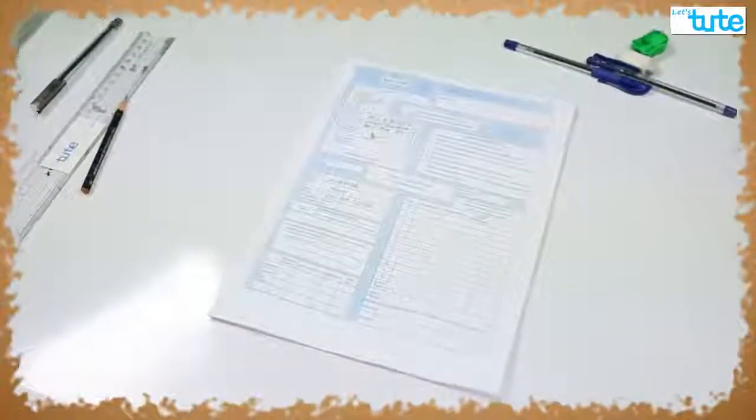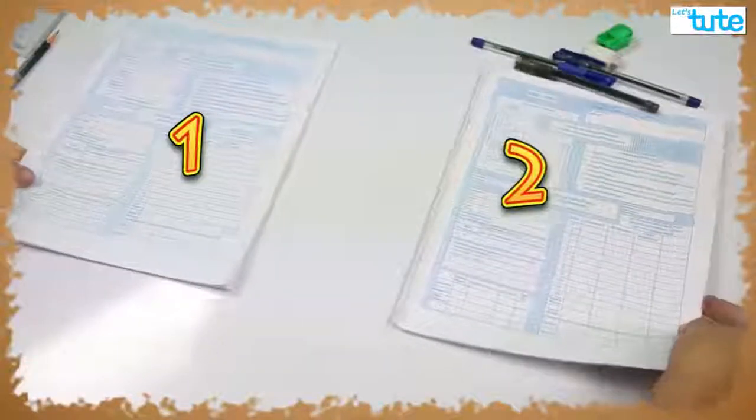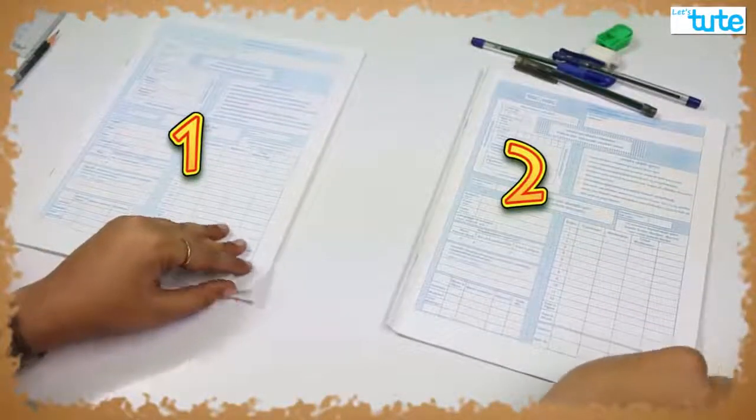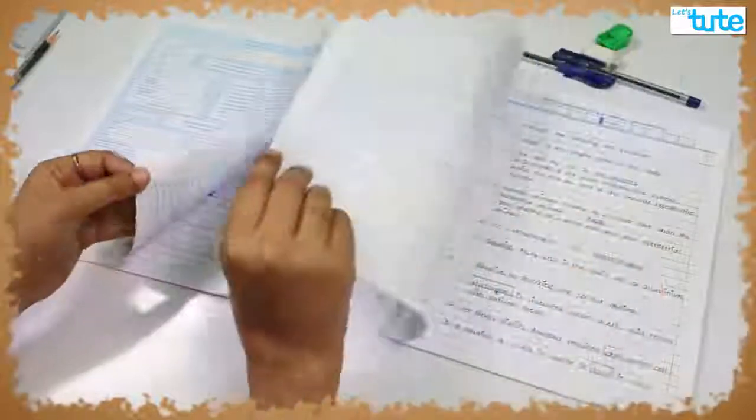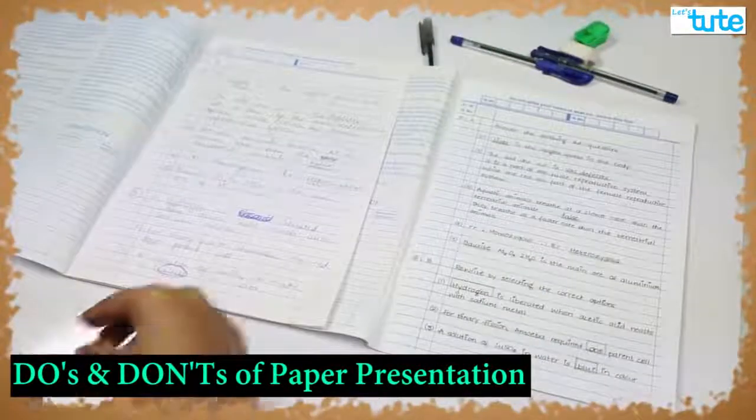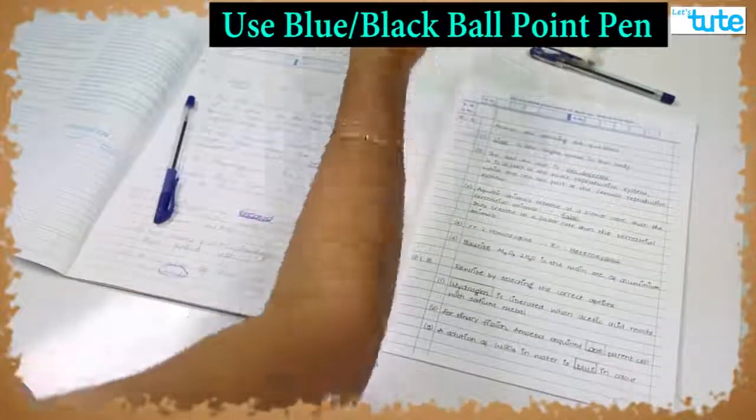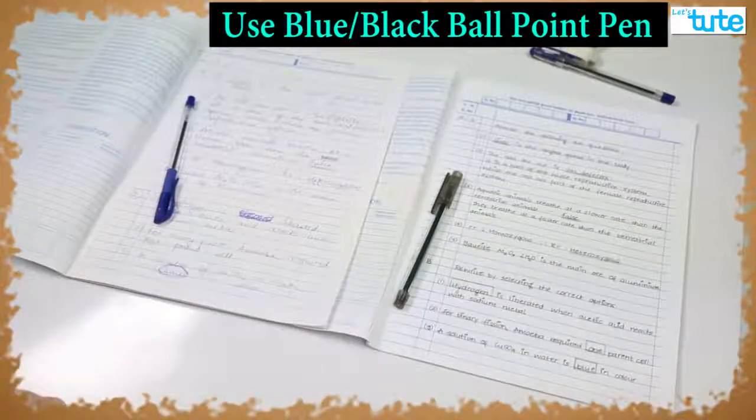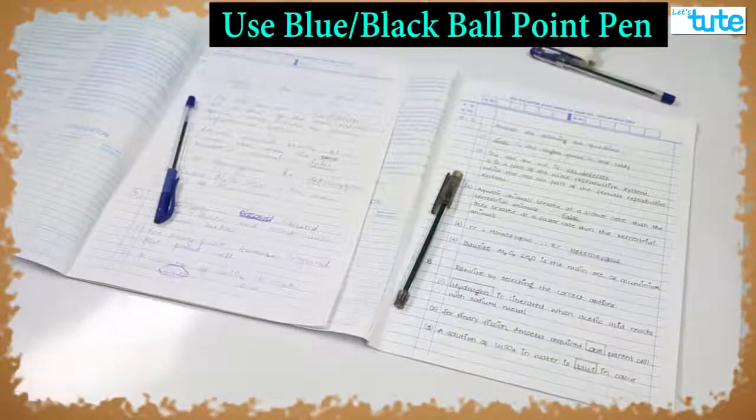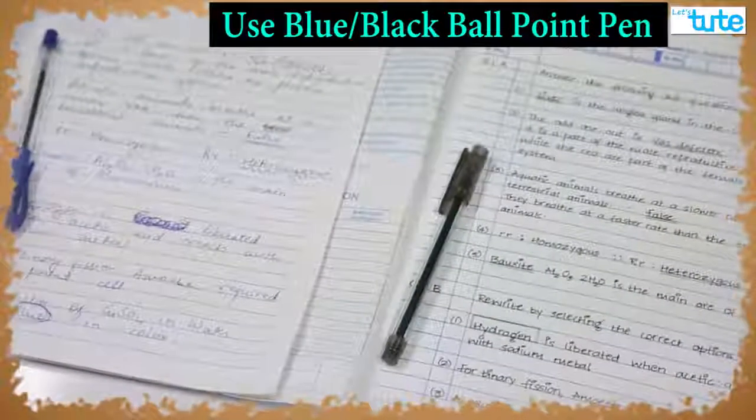Now comes the actual writing part. Here we have two answer booklets of the same subject. By comparing them, we will see certain do's and don'ts of paper presentation. Write your paper by using blue or black ballpoint pens only. Do not use any other colors like red or green. They are normally used by examiners and moderators.